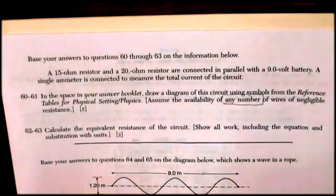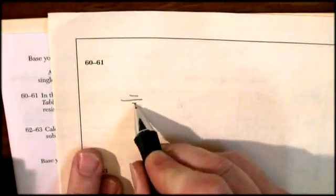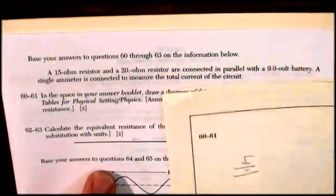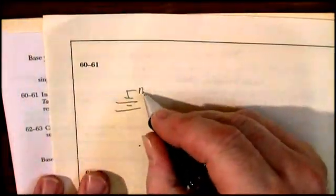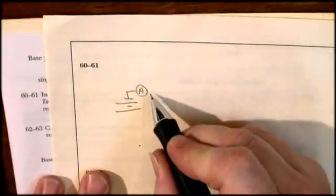And so I want them in parallel. So here would be the simplest way to do it. Set up your battery. Set up, now let me see, that wants the ammeter to measure the total current. So that's the next thing I want. Right out of this battery, I want an ammeter. That ammeter will tell me the current that's going to come out of the battery, that's all.